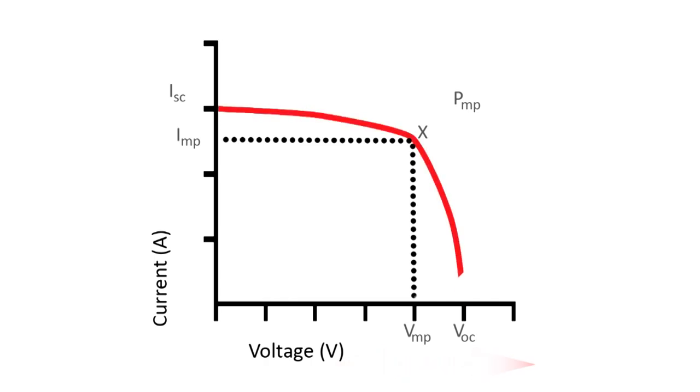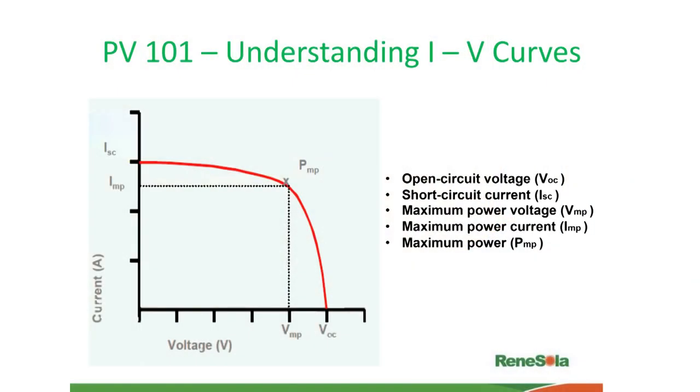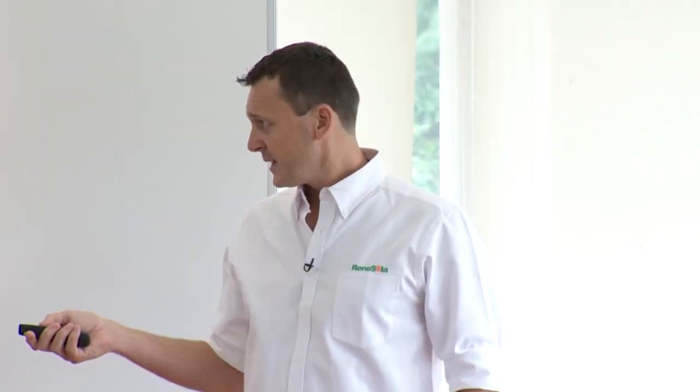So the curve that we see there is your short circuit current, and down at the bottom end here, your maximum voltage point is your open circuit voltage. So that's at non-operational periods for these two points. Typically when the solar panel is operating, it's giving you the performance somewhere along this curve.